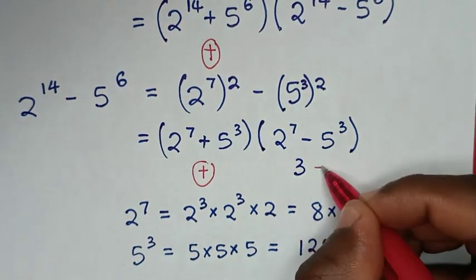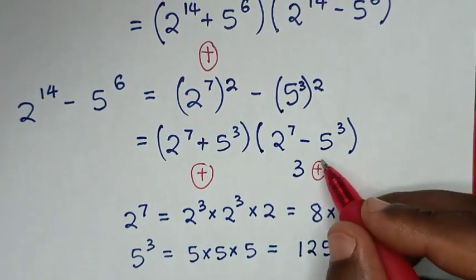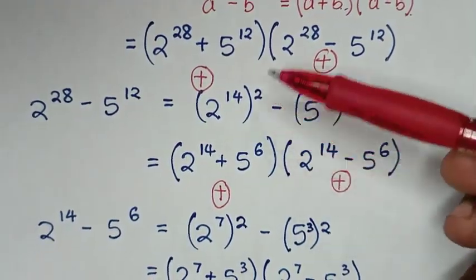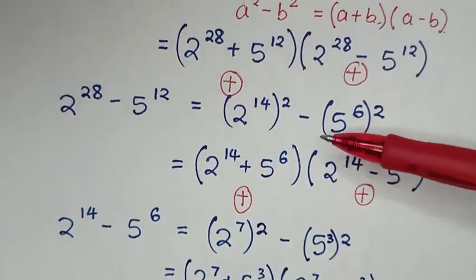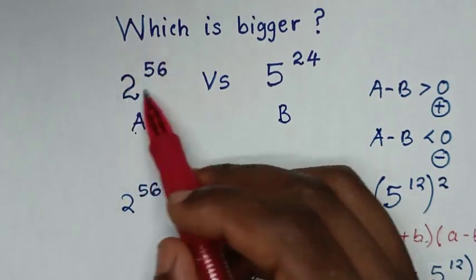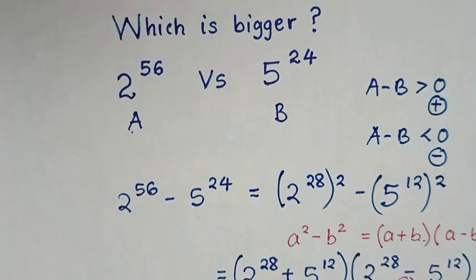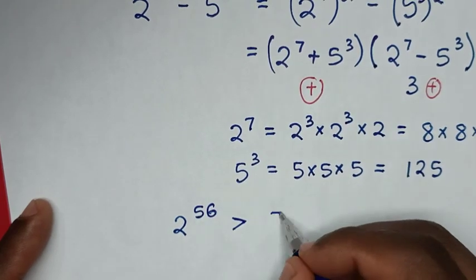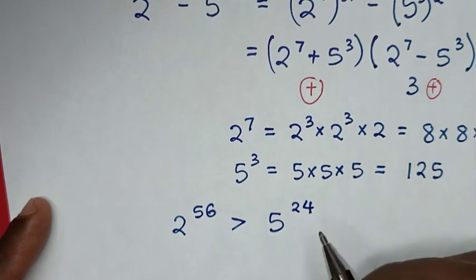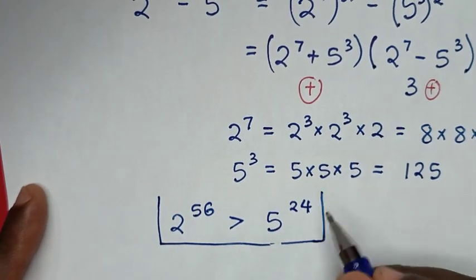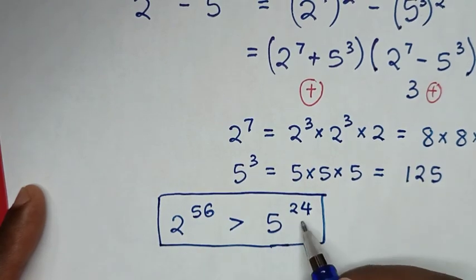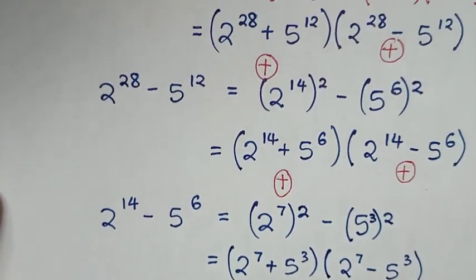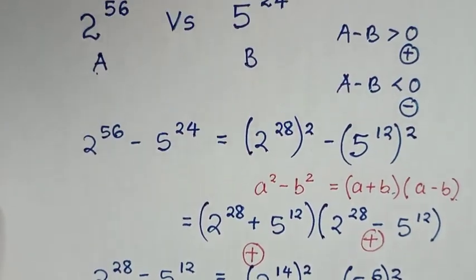This result is a positive value. So if this is positive, then all the differences up the chain are also positive values. That means the first exponent is greater than the second exponent. Our final answer: 2 power 56 is greater than 5 power 24. Thank you, don't forget to subscribe to my channel and see you in the next video — bye bye!